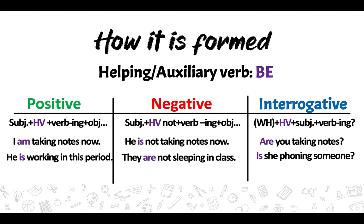The last sentence type is interrogative. We have the WH question word if you have one — where, who, how, how long, why, etc. Then the auxiliary or helping verb comes first, followed by the subject, then the verb-ING. For example: Are you taking notes? Is she phoning someone?